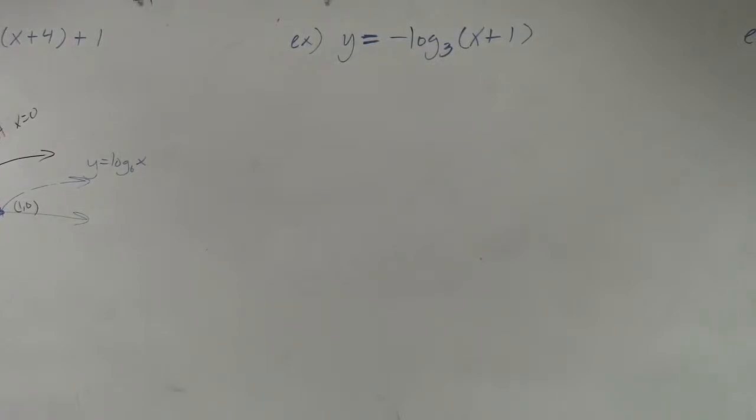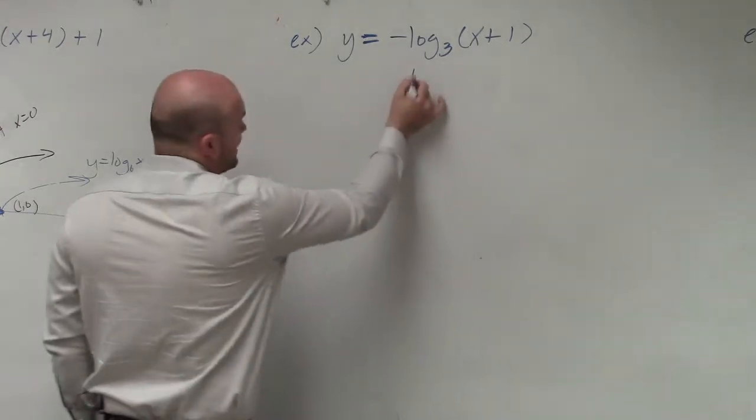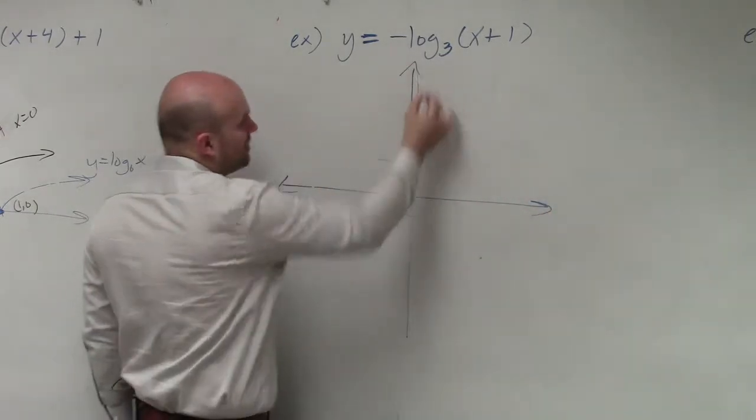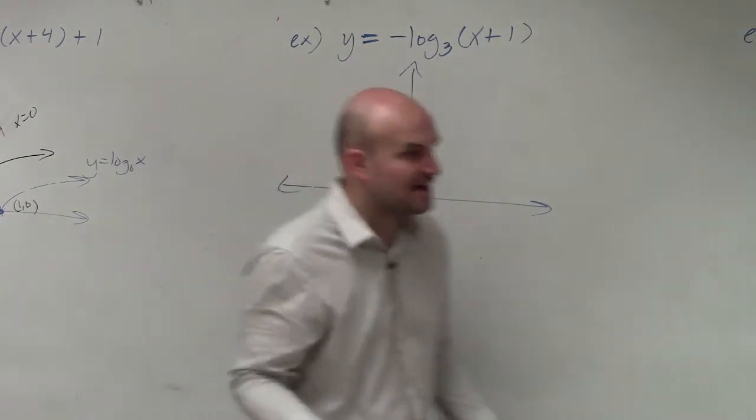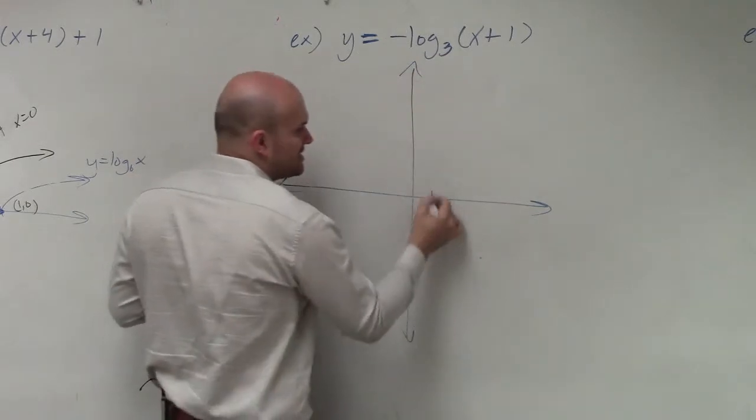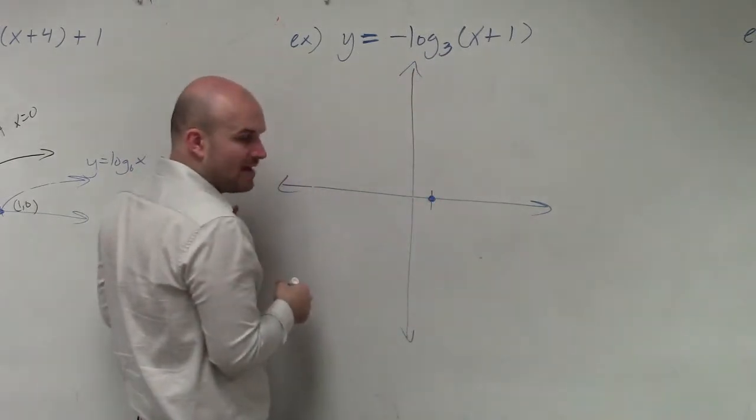So if I'm going to go ahead and graph this next one, the next thing we want to identify is basically all I want you guys to have is the parent graph graphed. And if you can just remember, the logarithmic graph, regardless of what the base is, is going to have an x-intercept at 1.